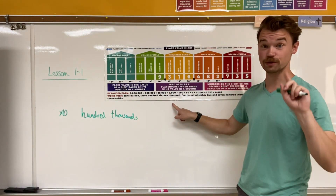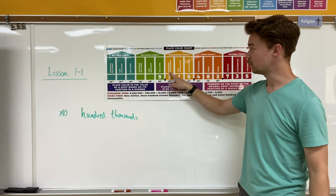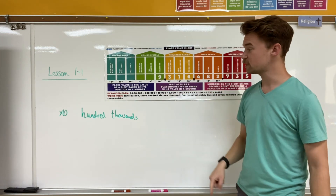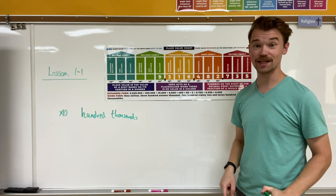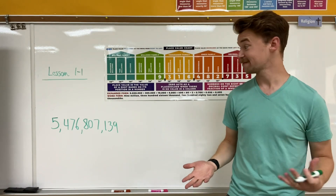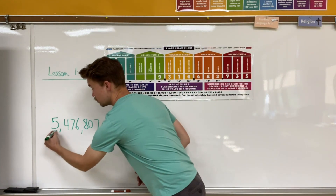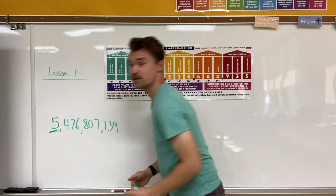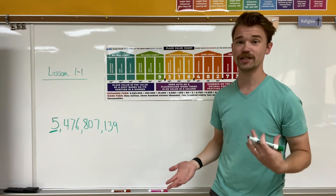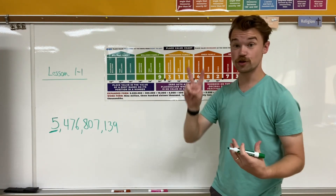Let's do an example. If I'm trying to find something that's 10 times greater than 100,000, I start from my 100,000 and go to the left by 10 times as much — which is only one space. So going from 100,000 over one space, that would be in the millions.